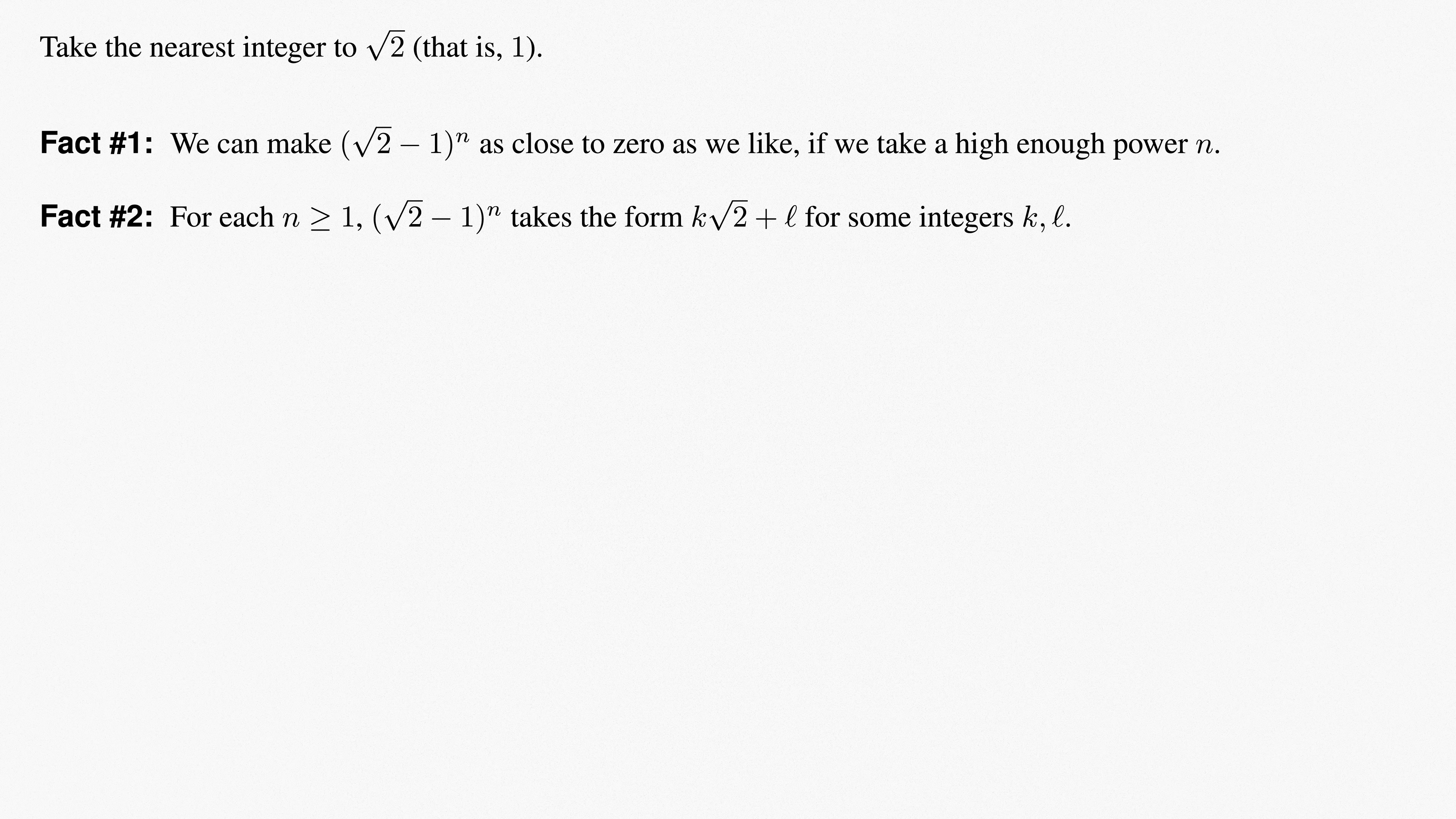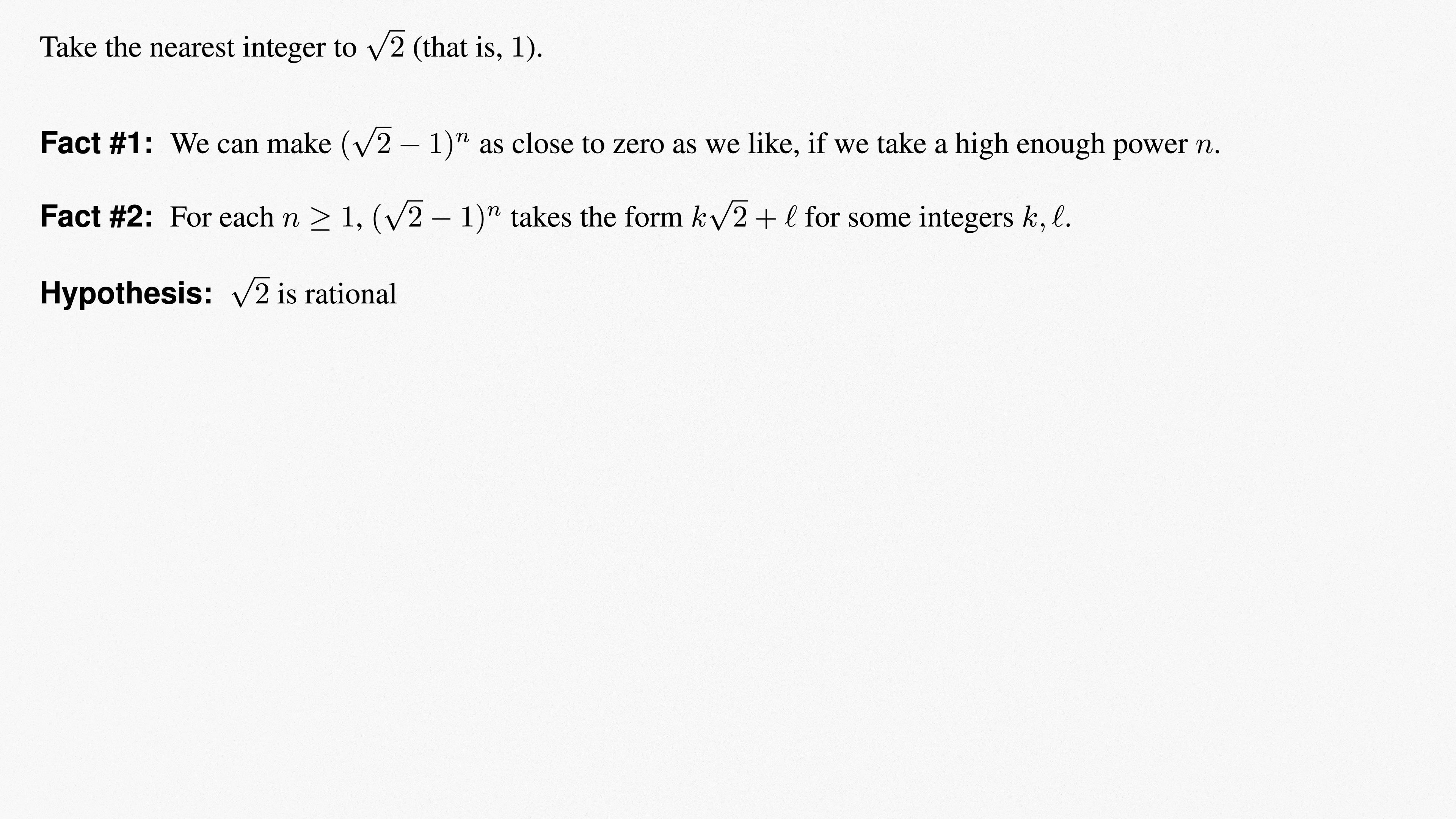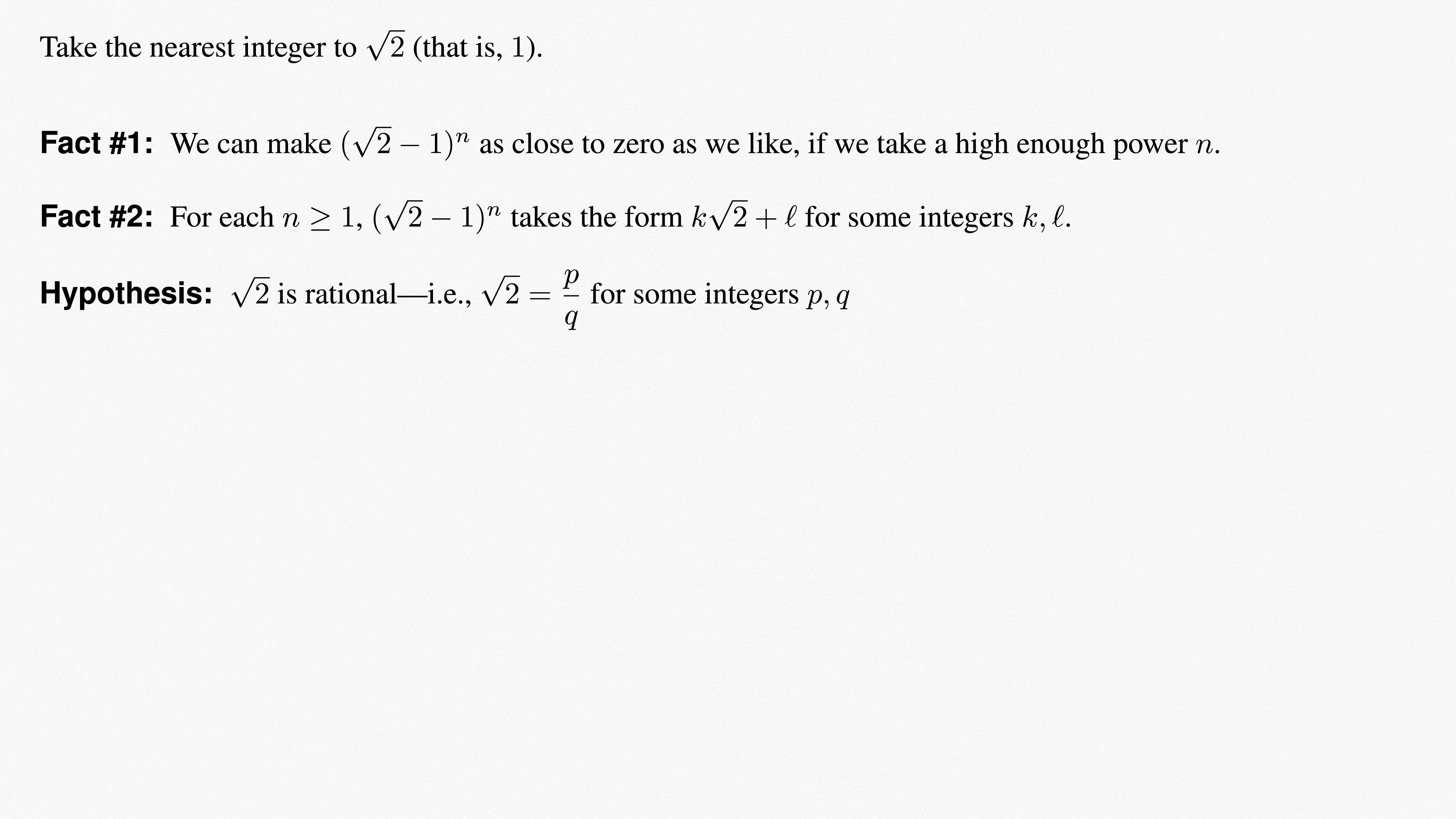As our final step, let's suppose that root 2 is rational. This will be the hypothesis of the result we're about to prove. As the hypothesis, we don't care whether or not it's actually true. We simply have to make logically sound deductions from it. Symbolically, we're supposing that root 2 equals p over q for some integers p and q. Note that it doesn't matter whether or not this fraction is in lowest terms, but let's have q be positive for convenience.